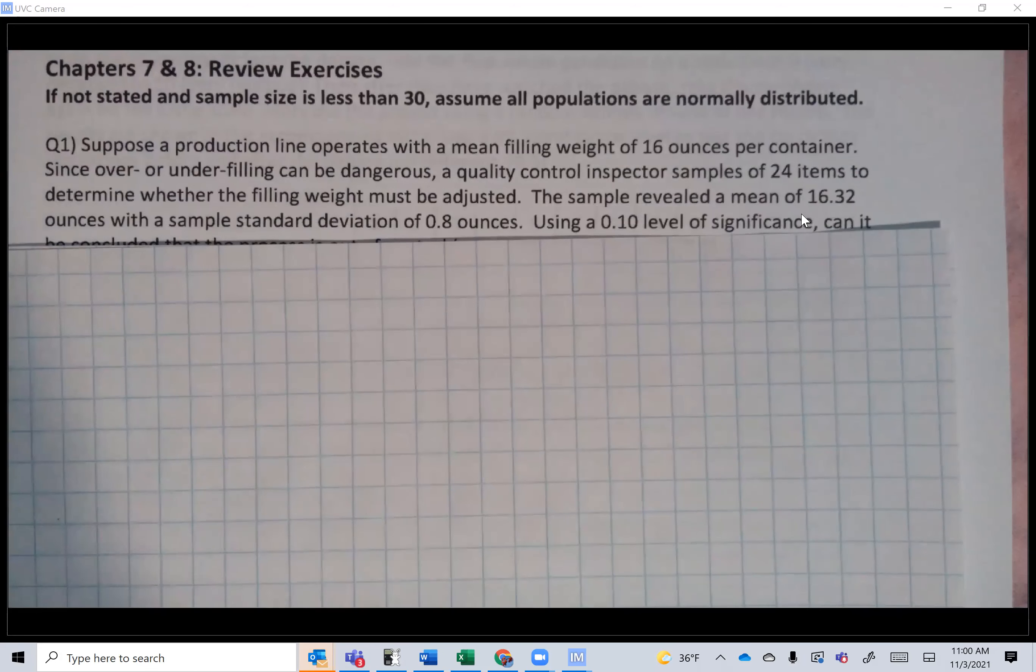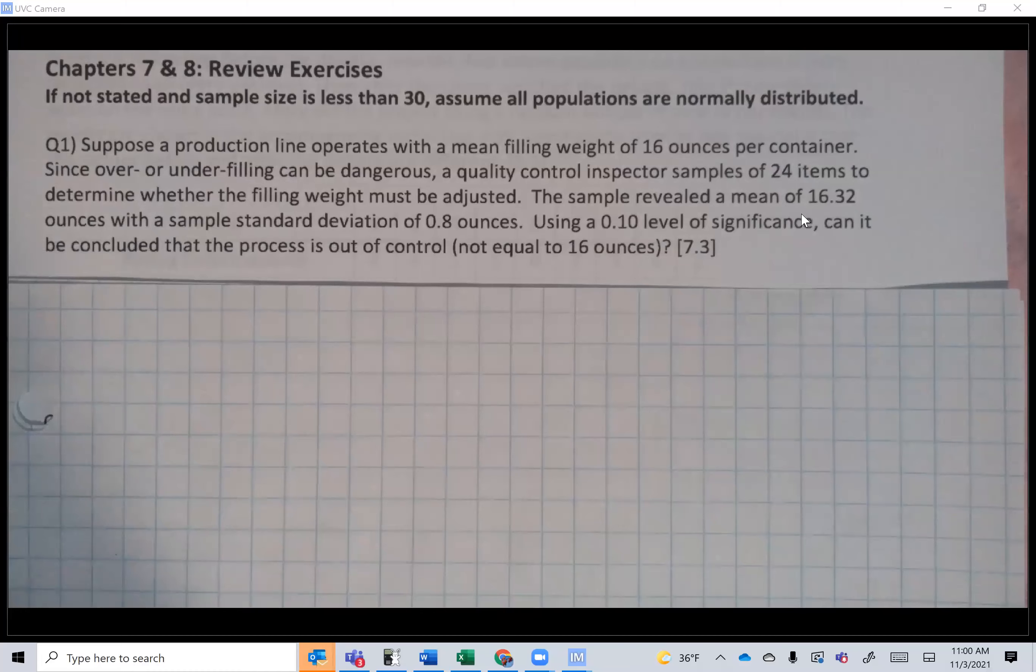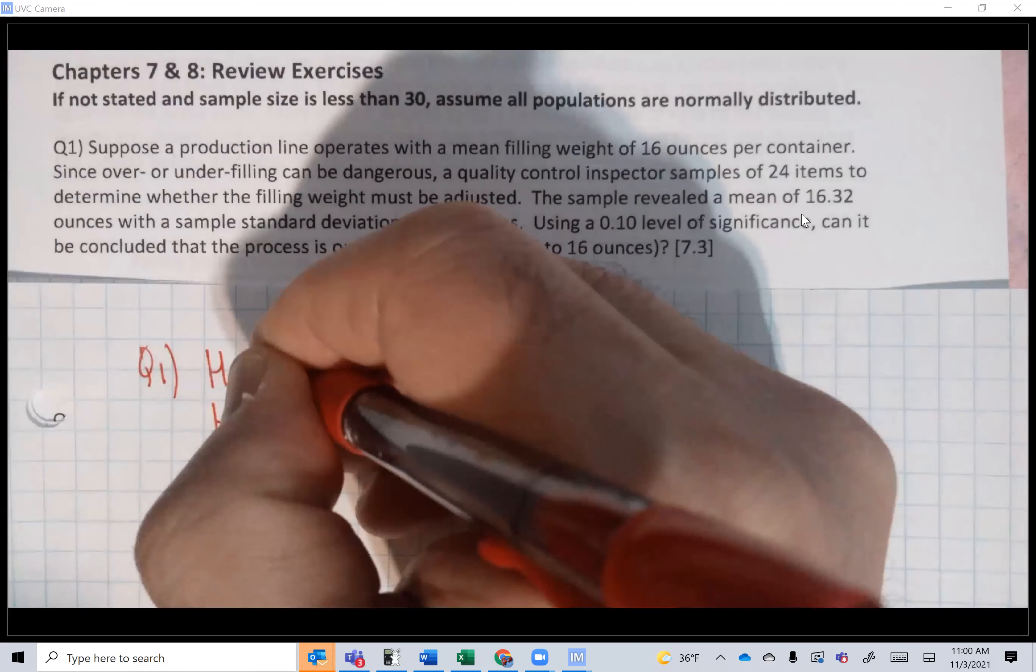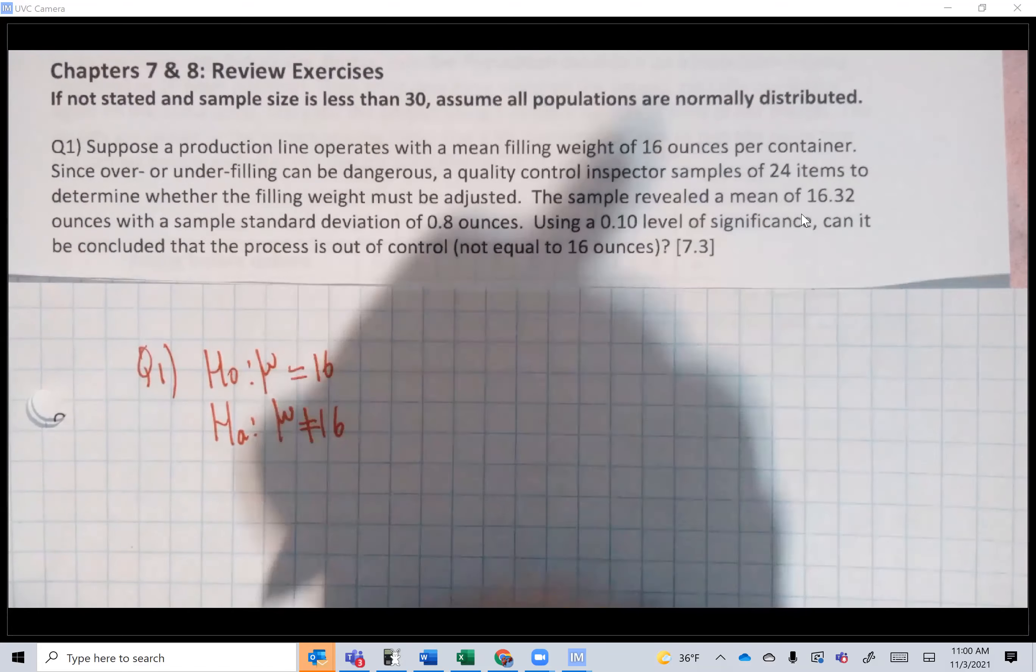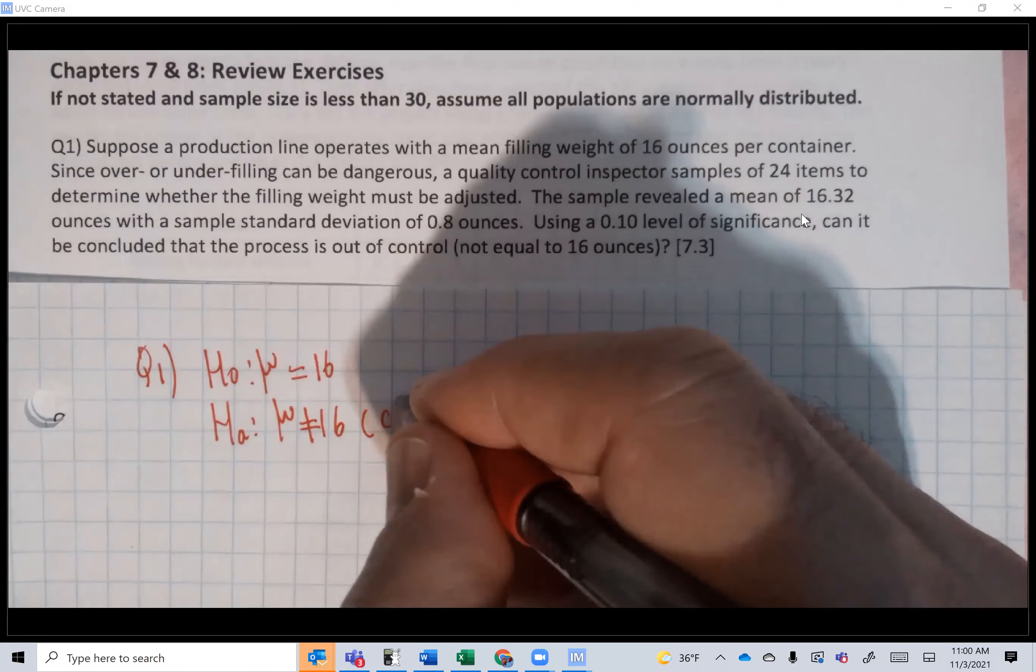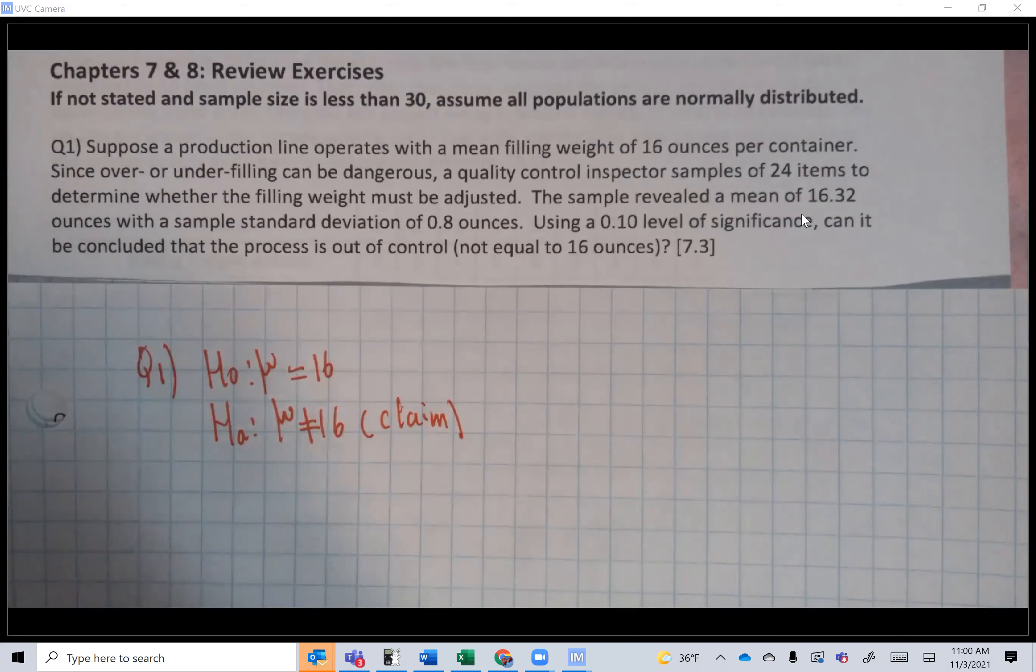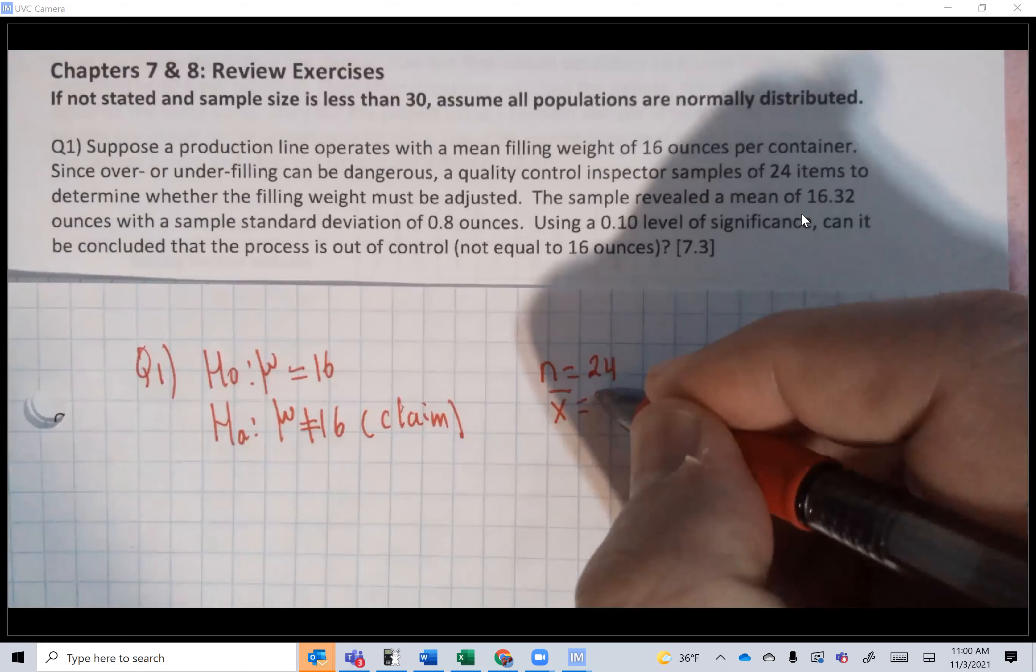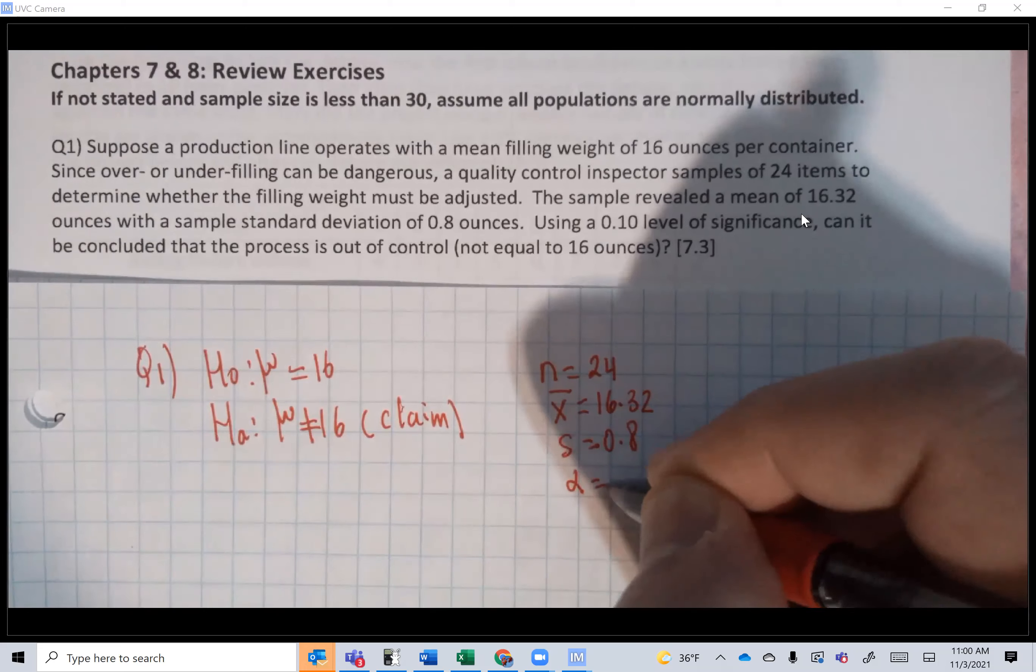So question one, H0: μ = 16, HA: μ ≠ 16. I want to check if it is out of control, so this is where the claim is. We have a sample size n = 24, x̄ = 16.32, s = 0.8 ounces, and alpha = 0.10. This is a t-test.